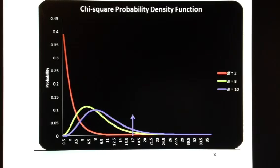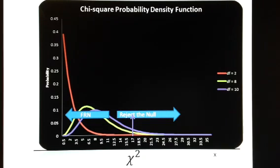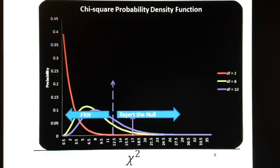This is how the chi-square distribution looks as a probability density function. If my calculated chi-square falls in the area of rejection, I will reject the null. If it falls in the area where we fail to reject the null, I will fail to reject the null. The critical chi-square value can be found with Excel.